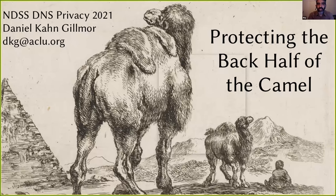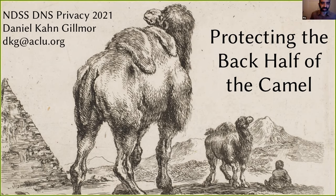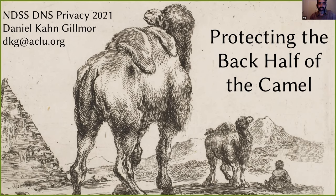Next, the keynote by DKG: Armor for the Back Half of the DNS Camel—why confidentiality matters for recursive DNS traffic. DKG: I want to talk about protecting the recursive-to-authoritative part of the DNS. This covers basically the same topic as the previous talk, but I think I landed at a different conclusion.